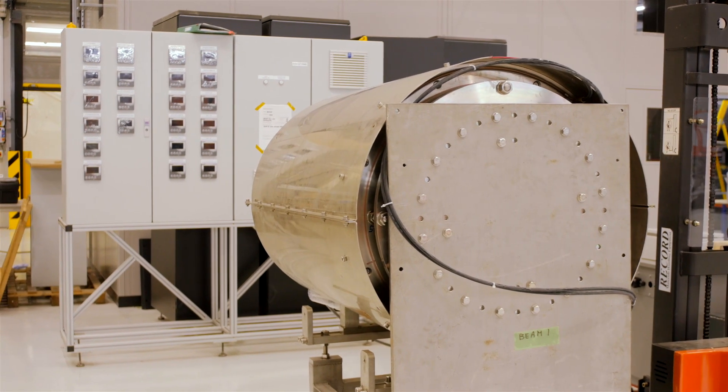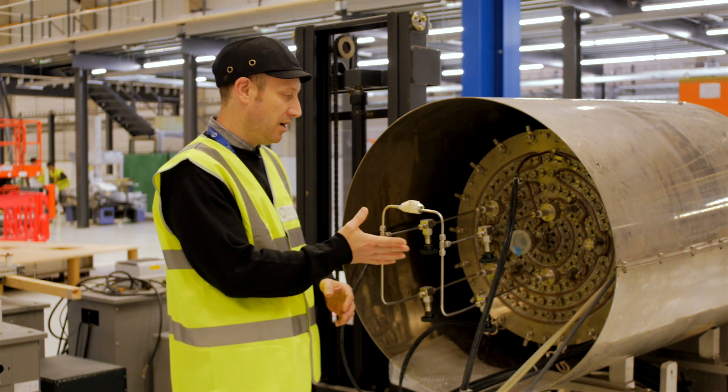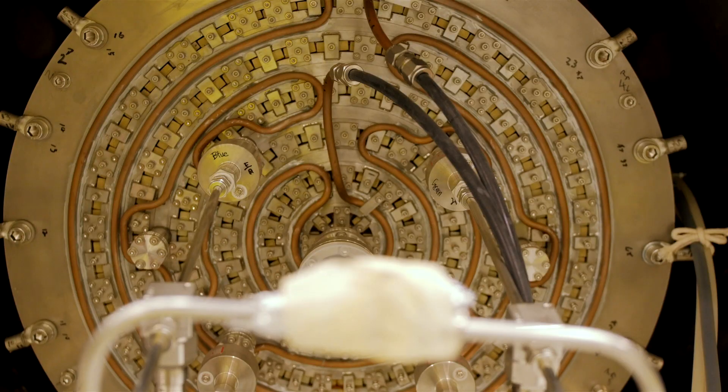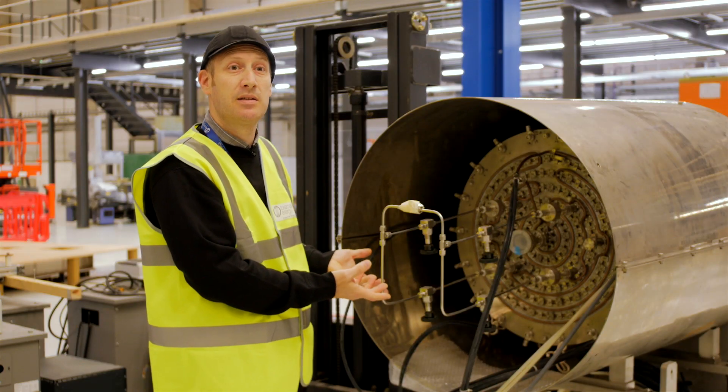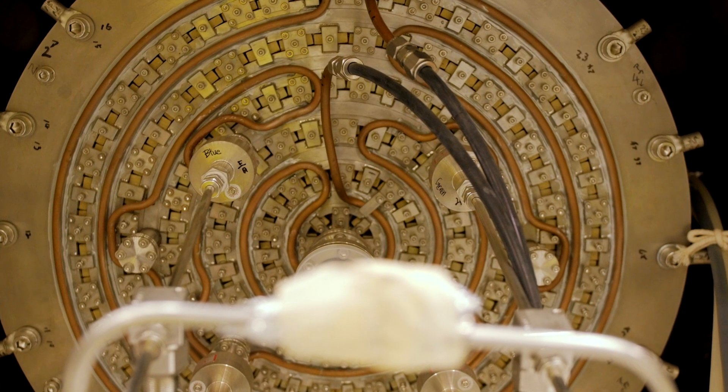The ion source is a plasma generator. This is an ion source where we inject hydrogen gas into a vacuum chamber. All on this back plate and around the sides are magnets, permanent magnets arranged in a certain pattern. There are 15 filaments inside this ion source.